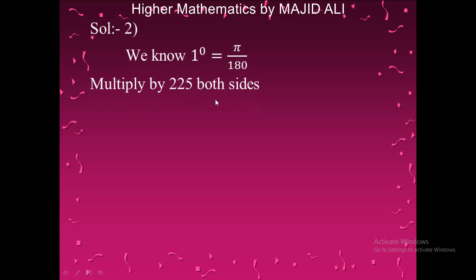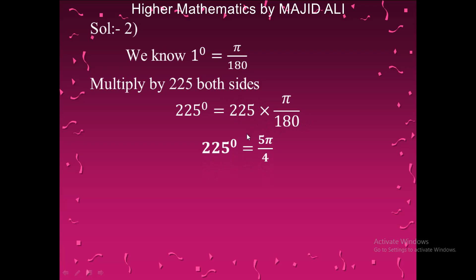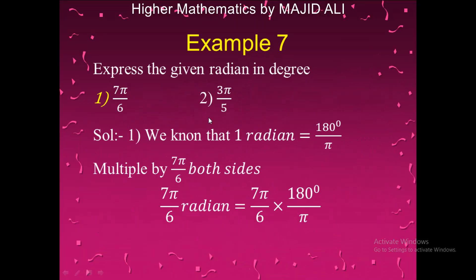Continuing Example 6 with 225 degrees: multiplying 225 by π/180 and cancelling common factors of 45, we get 5π/4 radians. Therefore, 225 degrees equals 5π/4 radians.